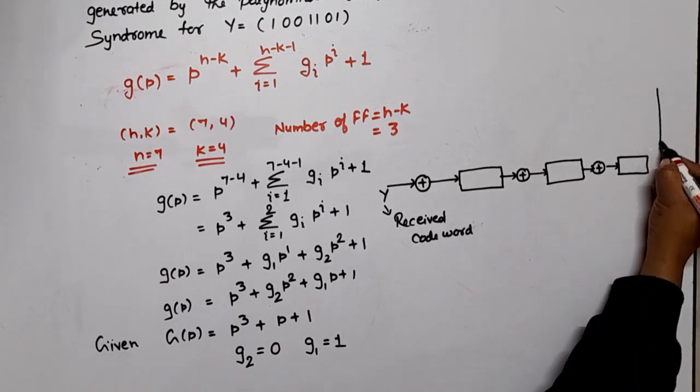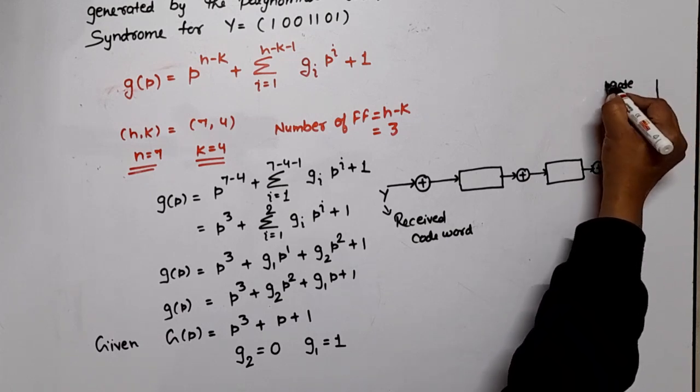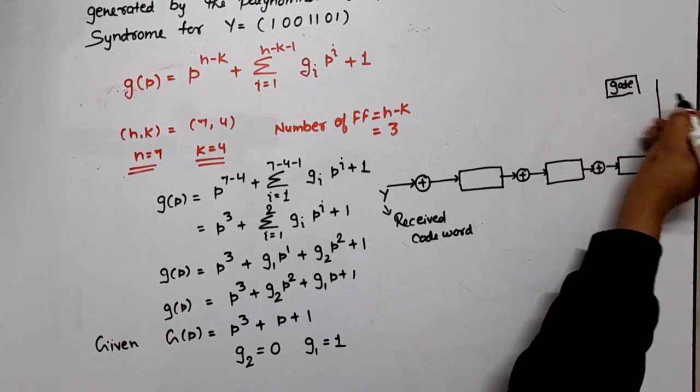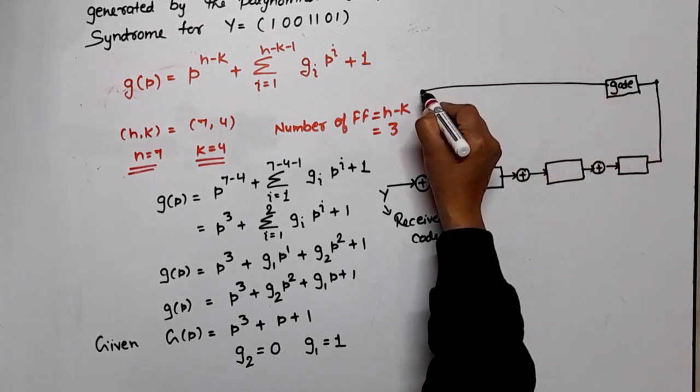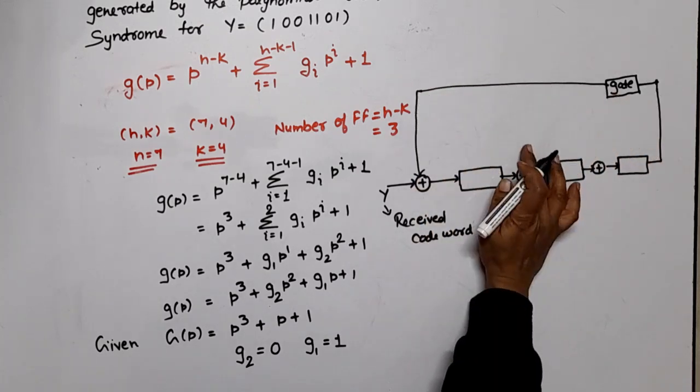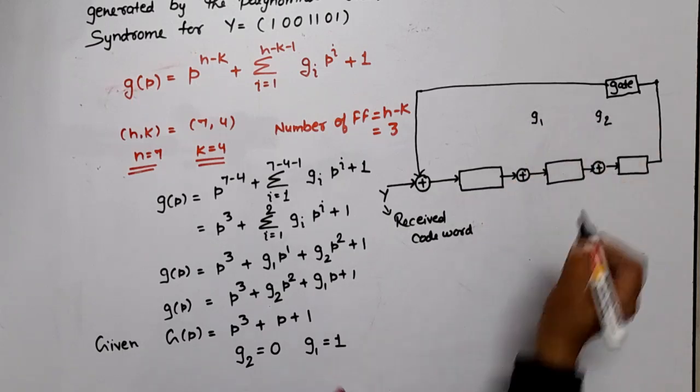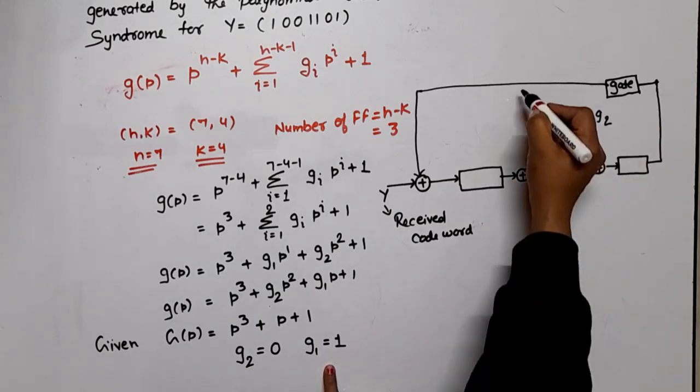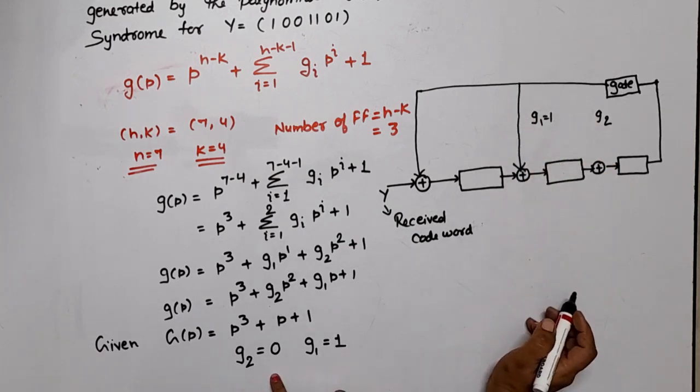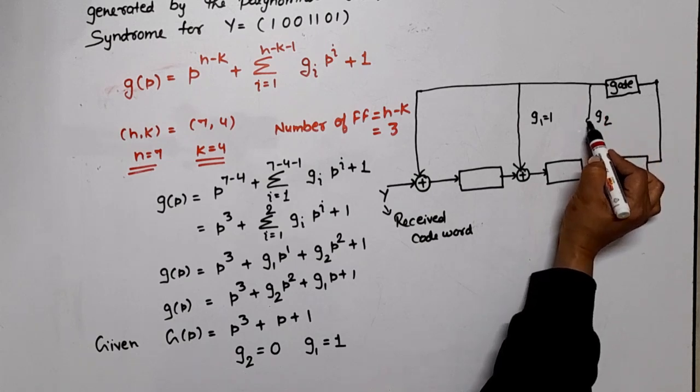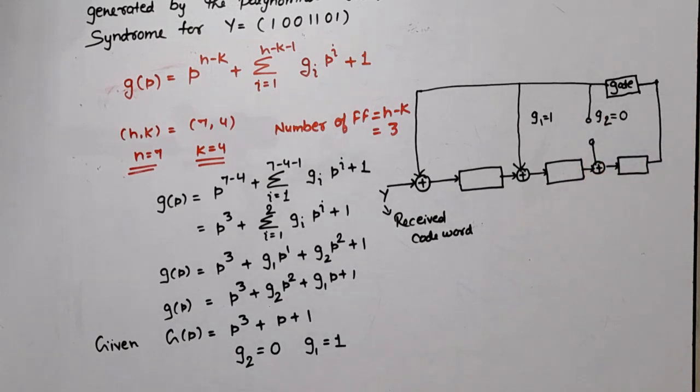When the feedback connection will be, this is for G₁ and this is for G₂. So, in our question, G₁ was available, means that it will be connected, because G₁'s value is 1. G₂'s value is 0, means this feedback will open, no connection, because G₂ = 0. These values will be.